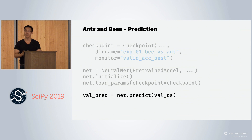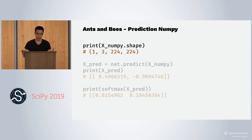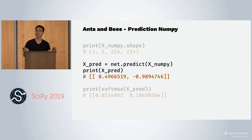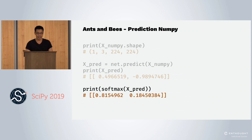Since Scorch supports both datasets and NumPy arrays, we could pass a NumPy array into predict. Even though this model was trained using the PyTorch Dataset API, it also supports using NumPy as inputs to get predictions from your neural net. Remember that these predictions are the raw values of the neural net — not normalized, just real numbers between negative infinity and infinity. So to get a probability, we have to call softmax.